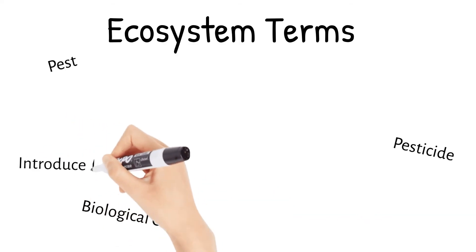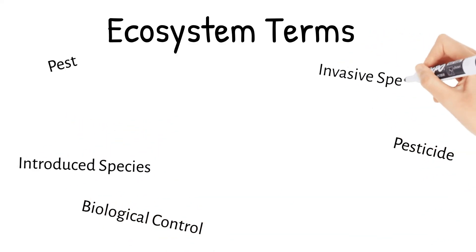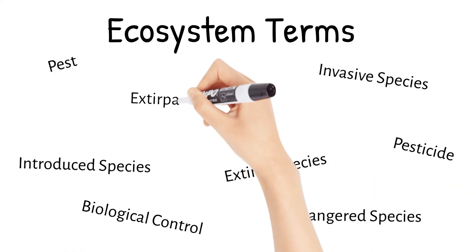Now you know more about pests, pesticides, biological controls, introduced species, invasive species, as well as species that are extinct, endangered, and extirpated. I hope knowing these terms help in your learning about ecosystems.